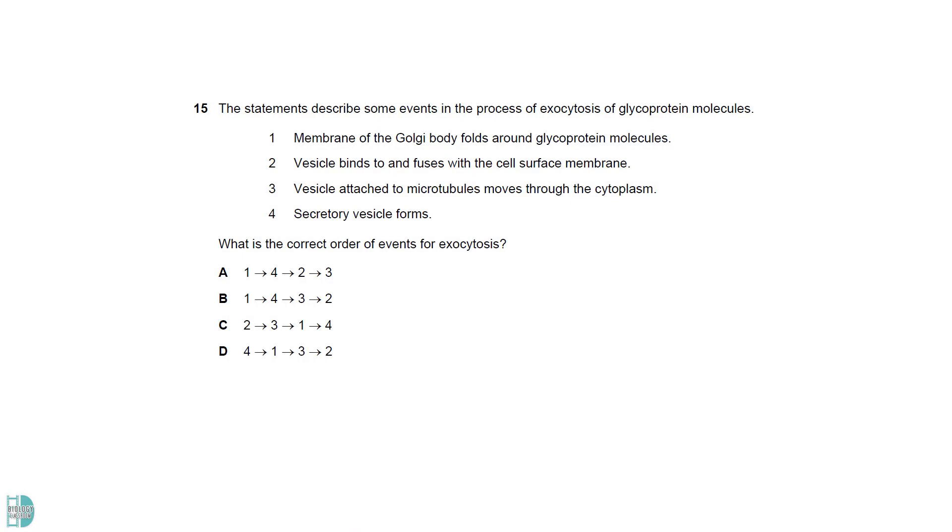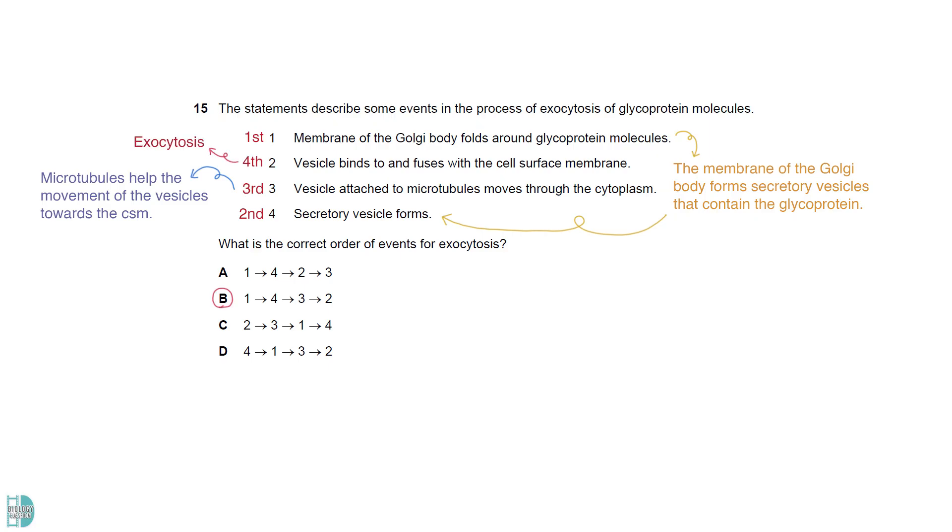The membrane of the Golgi body forms secretory vesicles that contain the glycoprotein. Then, microtubules in the cytoplasm help the movement of the vesicles towards the cell surface membrane. When the vesicle fuses with the cell surface membrane, its contents are released. This is exocytosis.